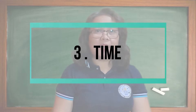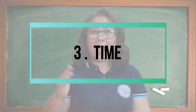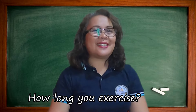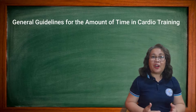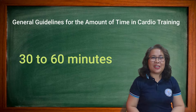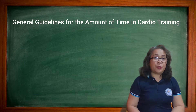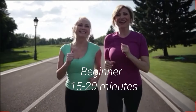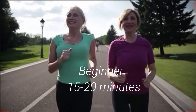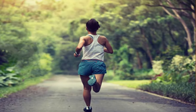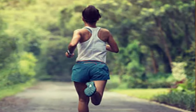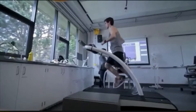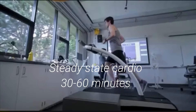The next element of your workout plan is how long you exercise each session. For cardio, exercise guidelines suggest 30 to 60 minutes. But duration depends on your fitness level and the type of workout you're doing. For a beginner, 15 to 20 minutes. Doing steady state cardio — for example, going for a run or using a cardio machine — 30 to 60 minutes.